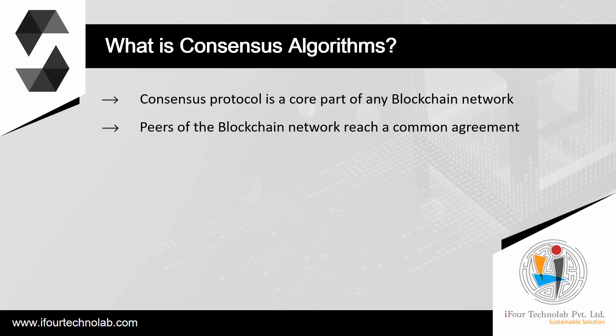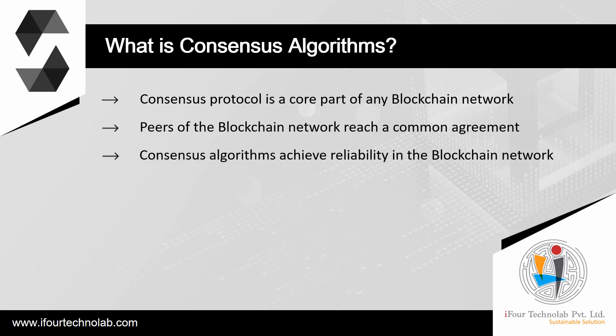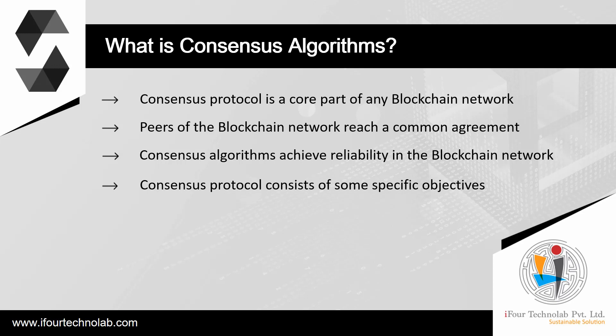A consensus algorithm is a procedure through which all the peers of the blockchain network reach a common agreement about the present state of the distributed ledger. Consensus algorithms achieve reliability in the blockchain network and establish trust between unknown peers in a distributed computing environment. The consensus protocol makes sure that every new block that is added to the blockchain is the only version of the truth that is agreed upon by all the nodes. The blockchain consensus protocol consists of specific objectives such as coming to an agreement, collaboration, cooperation, equal rights to every node, and mandatory participation of each node in the consensus process. Thus, a consensus algorithm aims at finding a common agreement that is a win for the entire network.